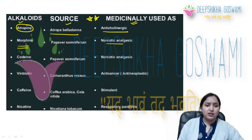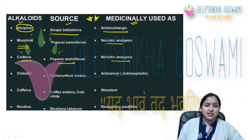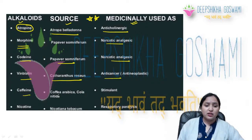Codeine: source is Papaver somniferum, used as a narcotic analgesic. Vinblastine: source is Catharanthus roseus, used as an anti-cancer agent. Caffeine: source is Coffea arabica and Cola nitida, used as a stimulant.